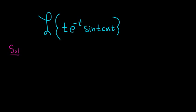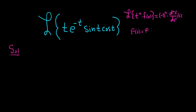Whenever you have a problem with the Laplace transform of t to a power times f of t, where you can actually compute the Laplace of little f, the following formula is extremely useful: it's negative 1 to the n times the nth derivative of big F with respect to s. Big F is the Laplace transform of little f. So you just differentiate it as many times as you need and plug it into the formula.